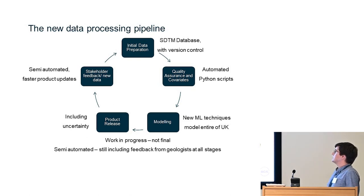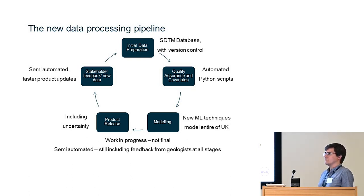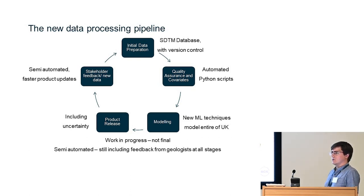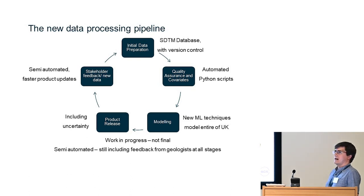In particular, there is a separate quality assurance section where we put in geological checks — for example, making sure we don't have a borehole saying it's 10 metres deep when it's over a region known to be rock surface, where perhaps the borehole location has been misrecorded. These Python scripts can be triggered whenever new data is added to the database, or on an annual or biannual basis.